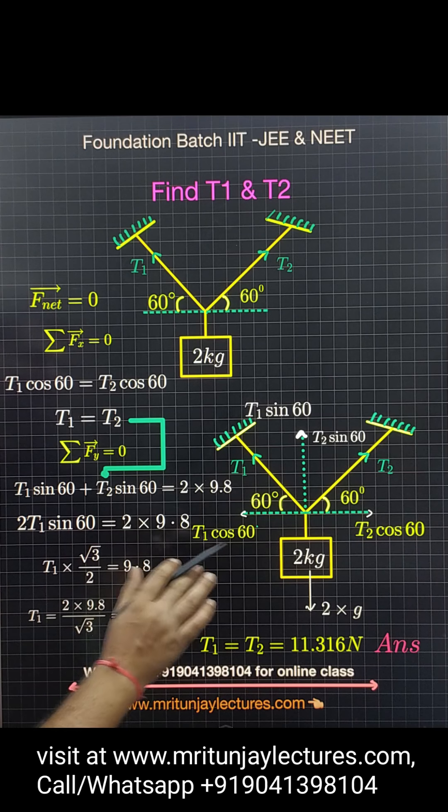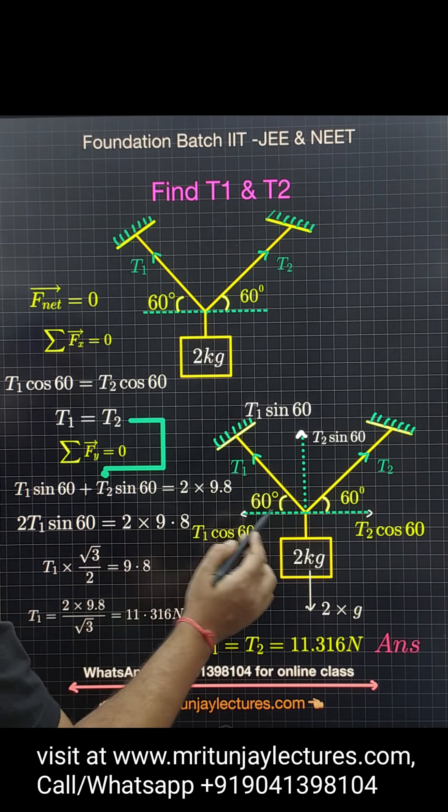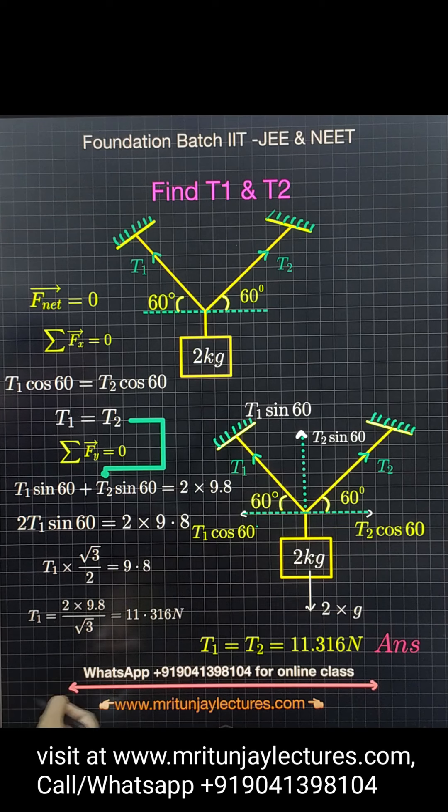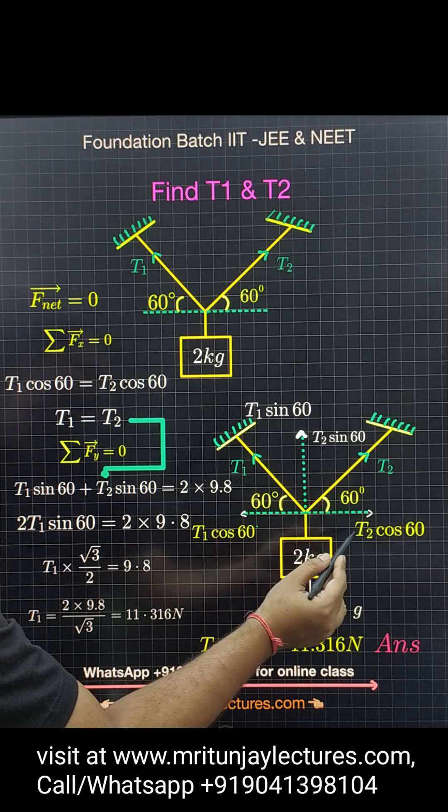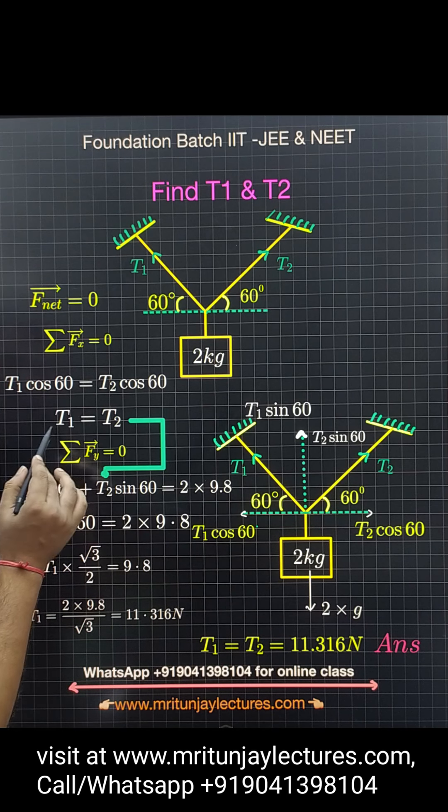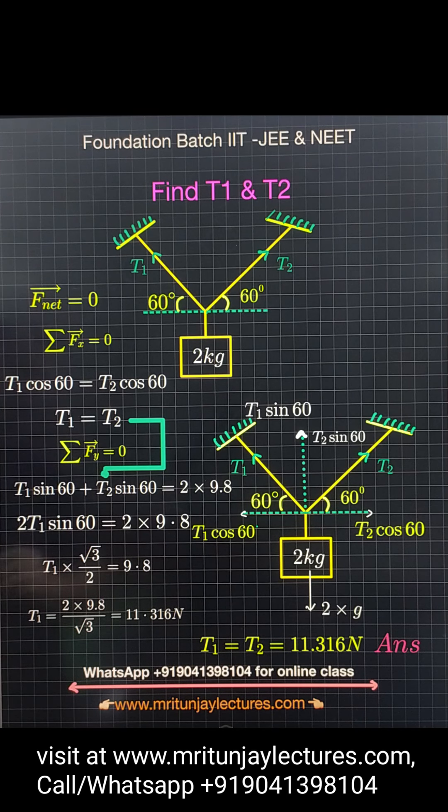Now, look here very carefully. If the net force along the x-axis is zero, what does that mean? T1 cos 60 equals T2 cos 60. So you can say T1 equals T2.